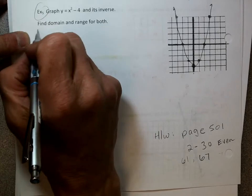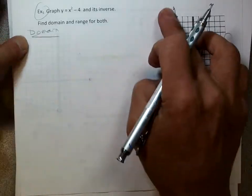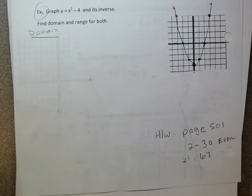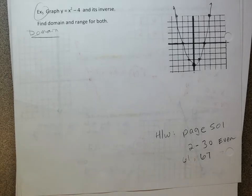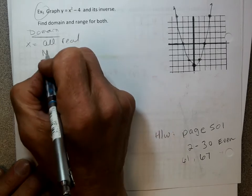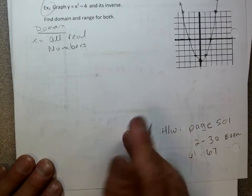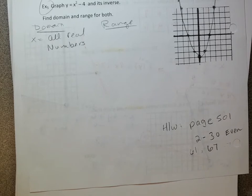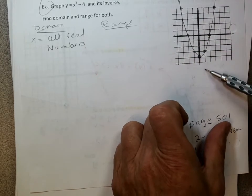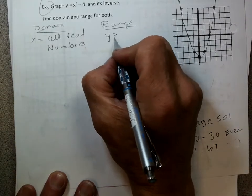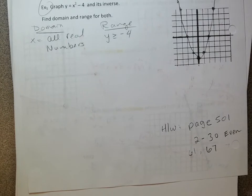What's the domain of this function? How wide is this graph? It goes forever wide, so the domain is x equals all real numbers. How about the range? The range starts at negative 4 and goes up — the graph doesn't go below negative 4. So we say y is greater than or equal to negative 4.